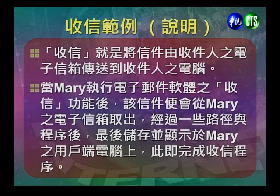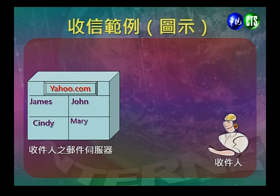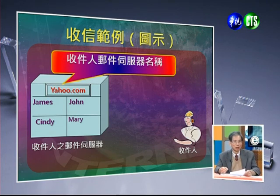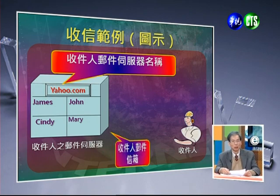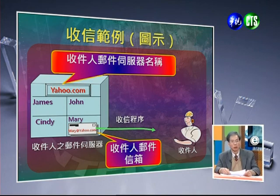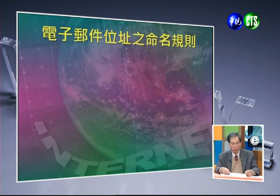收信的范例：收信就是将信件由收件人的电子信箱传送到收件人的电脑。当Mary想要收信时，会执行电子软体的收信功能，信件就会从电子邮件信箱取出，经过一些路径程序之后，传到Mary的电脑里面，完成电子邮件收信的程序。